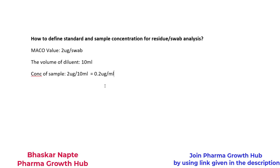This is the concentration of my sample at the working level. So how to define the standard solution concentration? It is always advisable to select the concentration of standard equal to its working level. As my working level is 0.2 microgram per mL, I would prefer the concentration of standard to also be 0.2 microgram per mL. Then I conduct some experiments because I may not have the test procedure in hand and I do not know what parameters are right to achieve a good response for my standard.